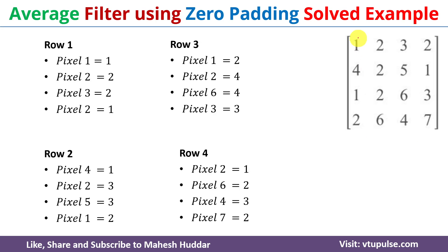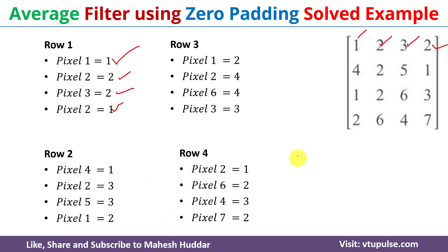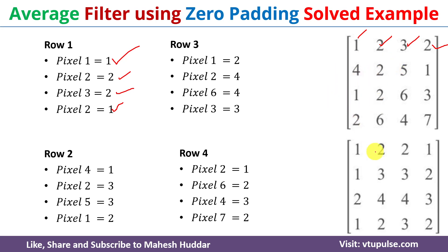For pixel 1 the average value is 1, for pixel 2 the average value is 2, for pixel 3 the average value is 2, and for the next pixel 2 the average value is 1. We find the remaining average values for all the pixels, and once we replace the pixel values by the average values we get the filtered output image.